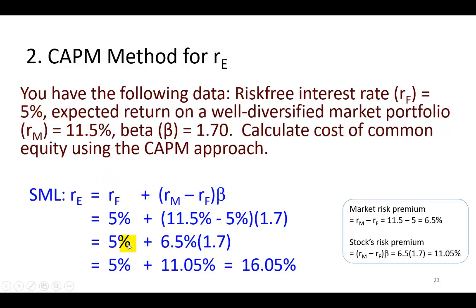In this example, the risk-free interest rate is 5%. To that we're going to add the risk premium of the stock being evaluated. There are three aspects to this estimation. The first is the market risk premium, which is defined as the difference between the return on the market and the risk-free interest rate. In this example it comes out to be 6.5%, reflecting how much more return investors require over and above the risk-free rate to invest in a well-diversified stock portfolio. The second is the stock's risk premium, which takes the market risk premium and adjusts it for the systematic risk of the stock measured by beta. In this case, the beta of the stock is 1.7.